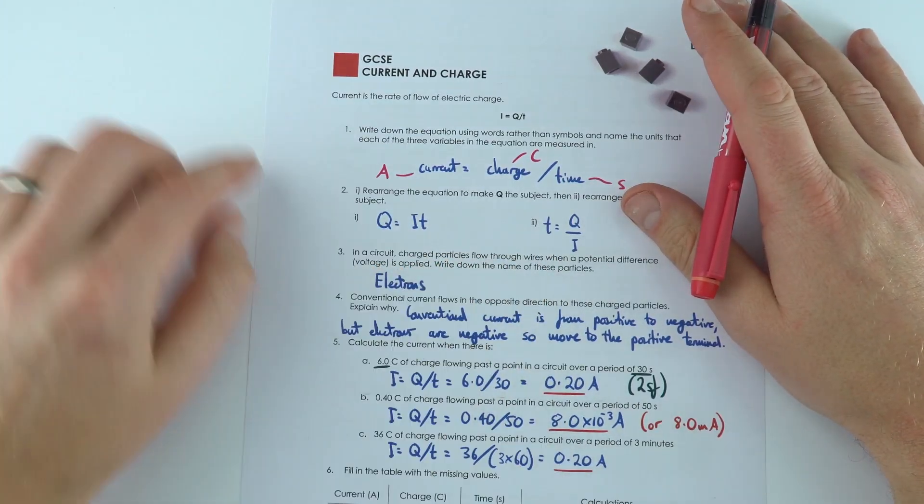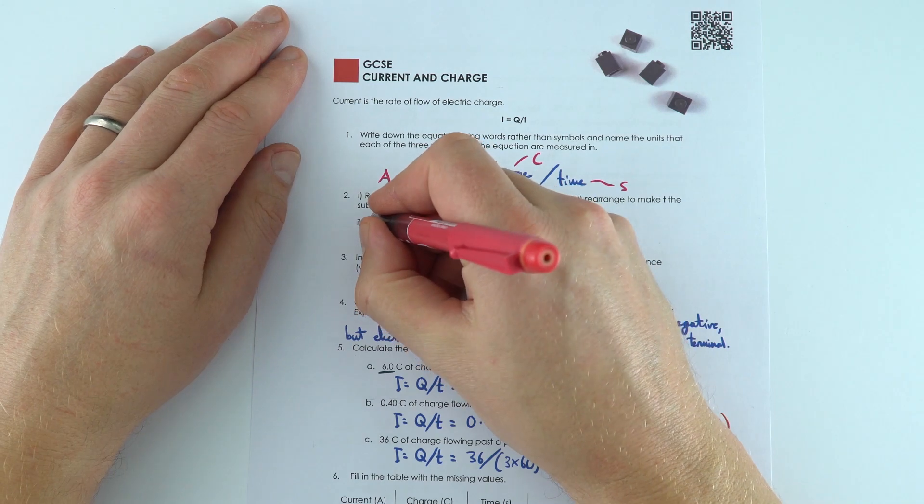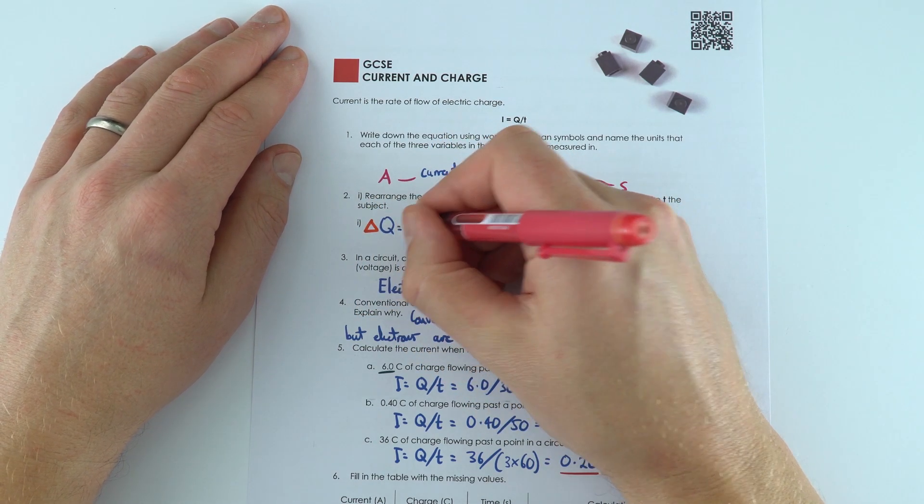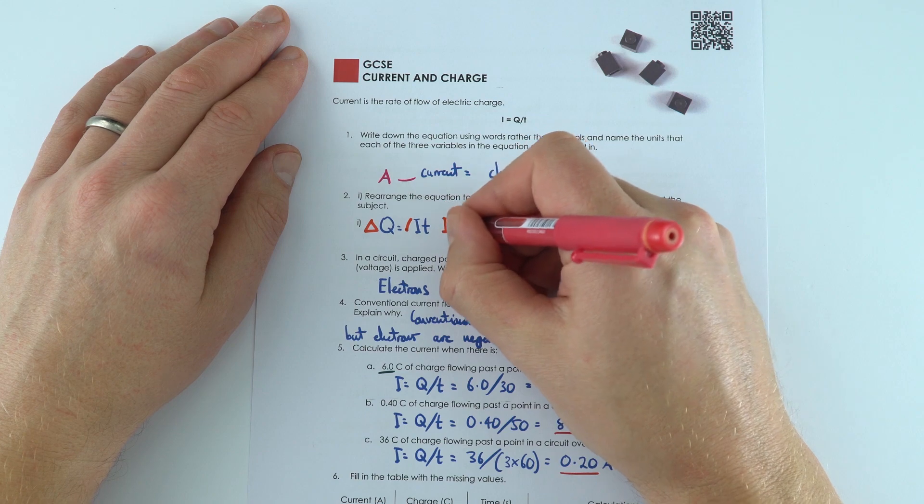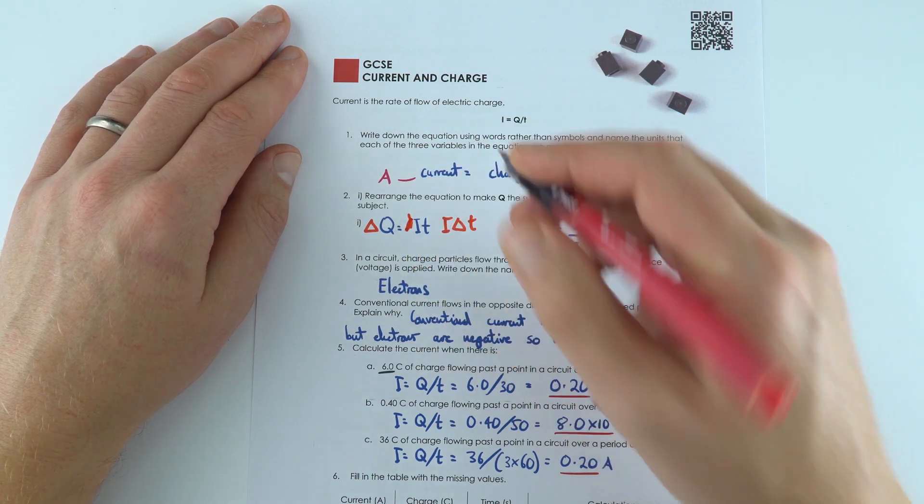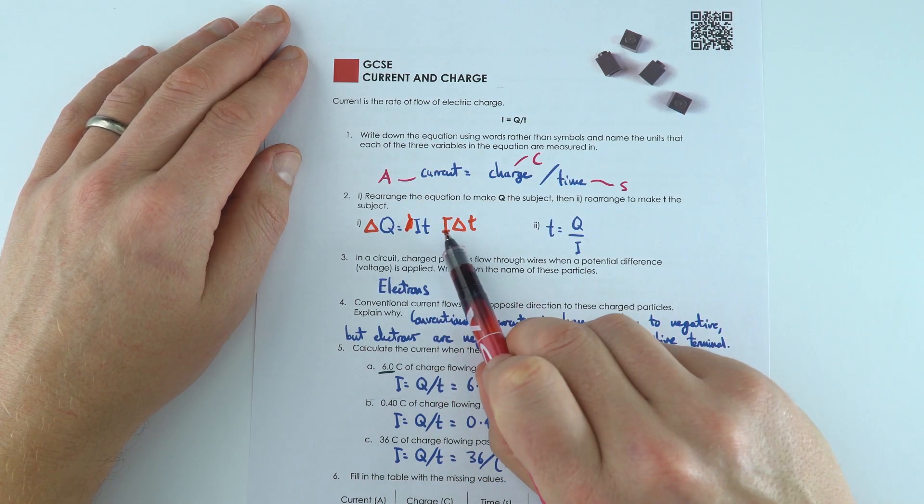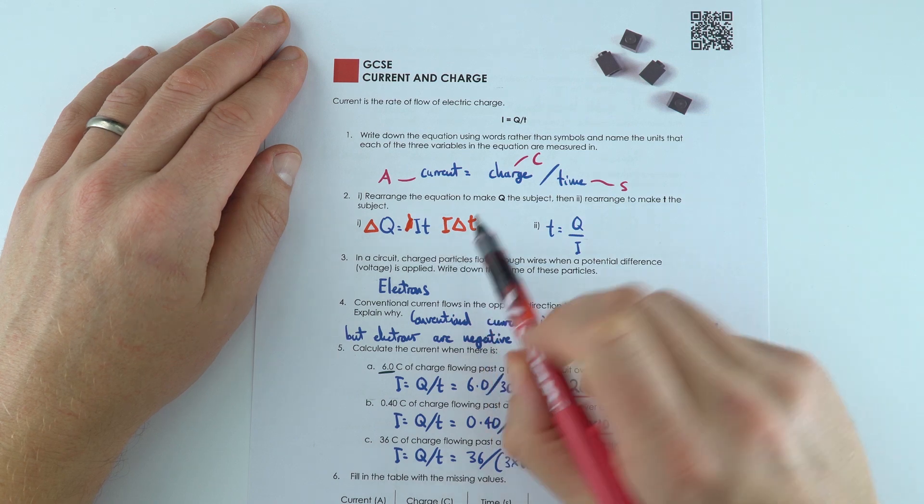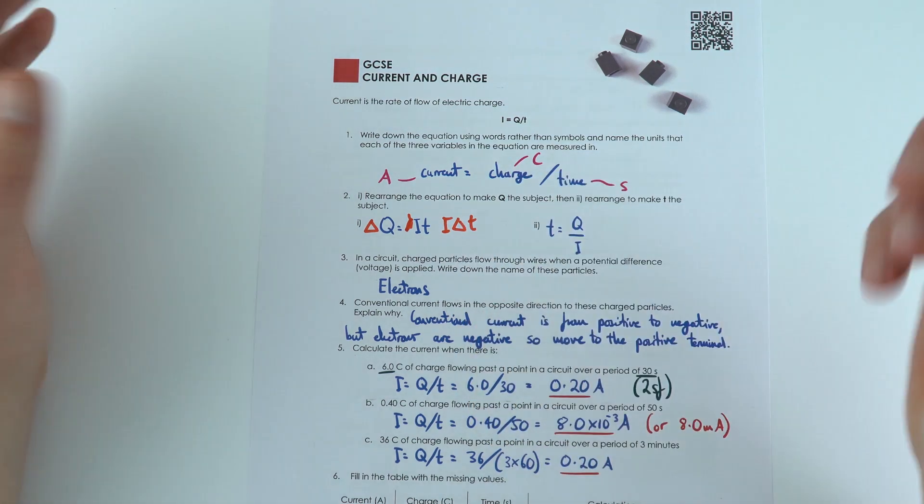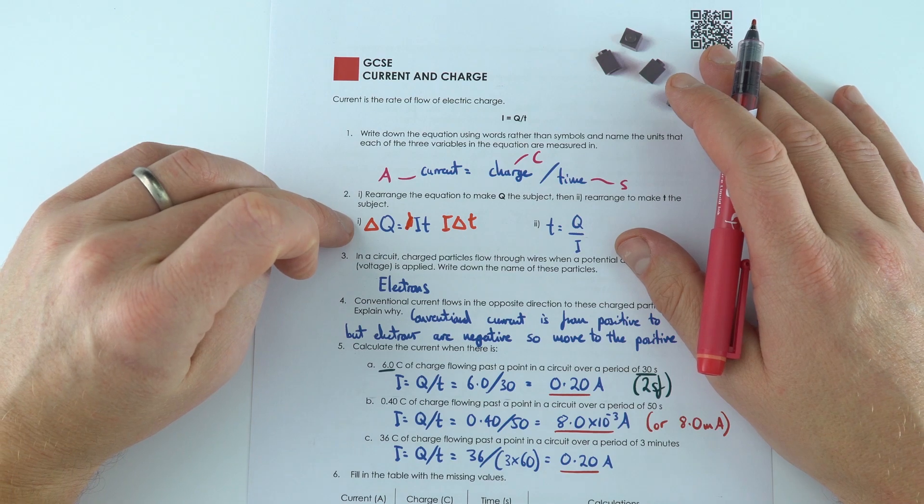So we've got the equations down here. Sometimes this is also seen as delta Q equals I times delta T. And this just means the change in charge is equal to the current times the change in time. So the delta just means change in. It depends on which exam board you're following for your GCSEs.